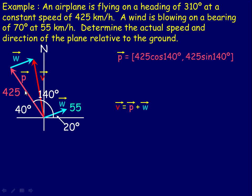In order to calculate the components of the plane vector, it would be its size, 425 km/h, times the cosine of 140 degrees for the x-component, and 425 times the sine of 140 degrees for the y-component. Evaluating those gives negative 325.6 for the x-component and 273.2 for the y-component. So for this vector, the horizontal amount would be negative 325.6 and the vertical distance up here would be 273.2.